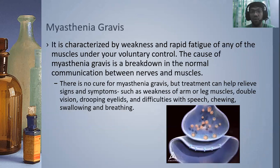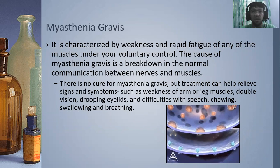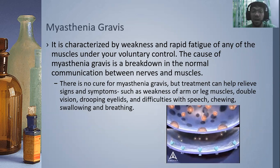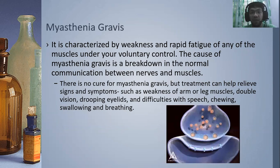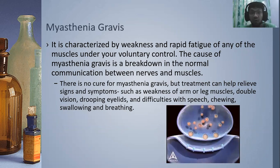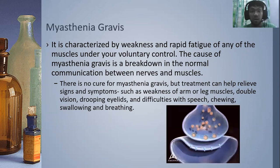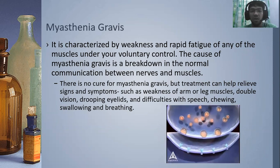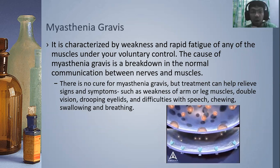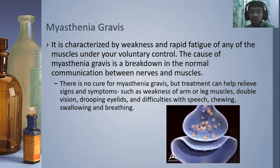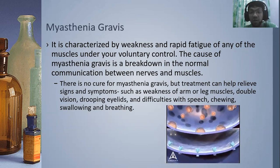We'll start out with what myasthenia gravis is. In this disease, it's a CNS disease. It is characterized by weakness and rapid fatigue of any of the muscles under our voluntary control, so it affects the skeletal muscles. The cause of myasthenia gravis is technically unknown — the one being explained here is just a theory.